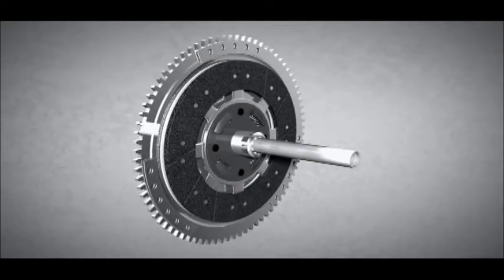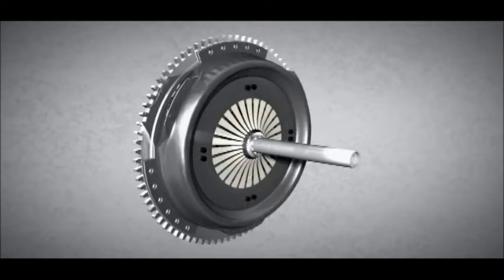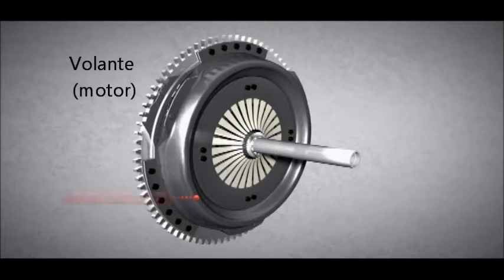The pressure plate is needed for engaging and disengaging the clutch disc. The pressure plate is riveted to the flywheel. As a result, the pressure plate rotates when the flywheel rotates.